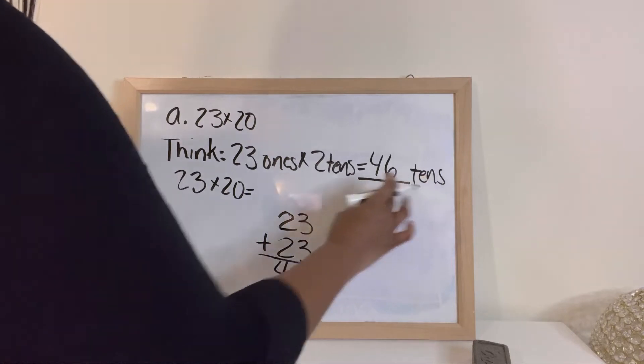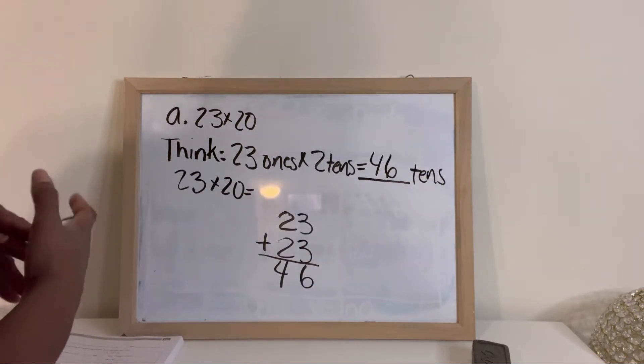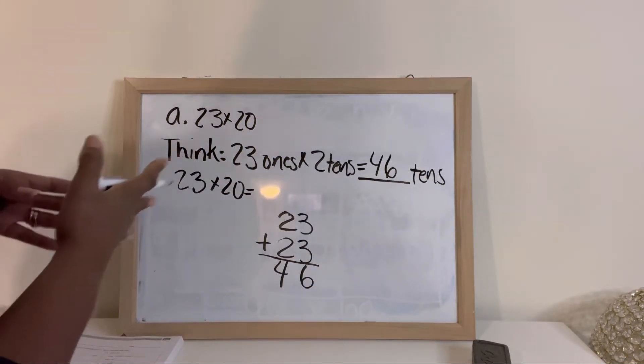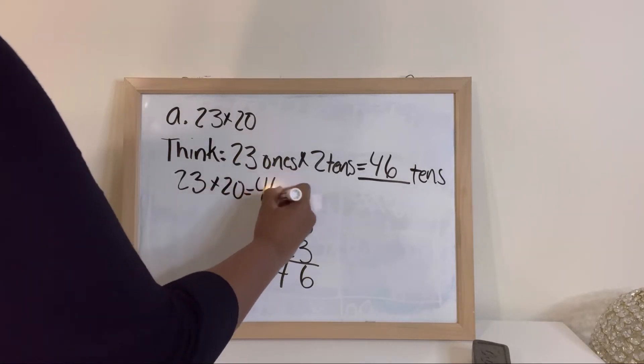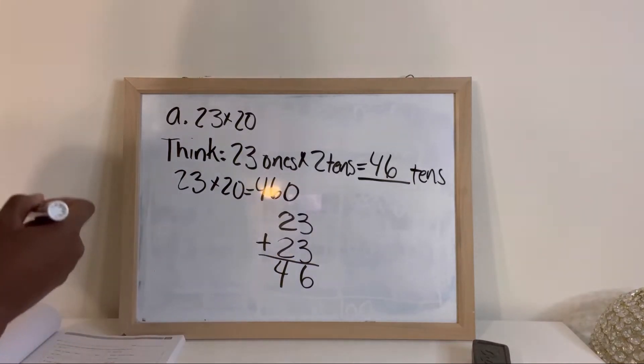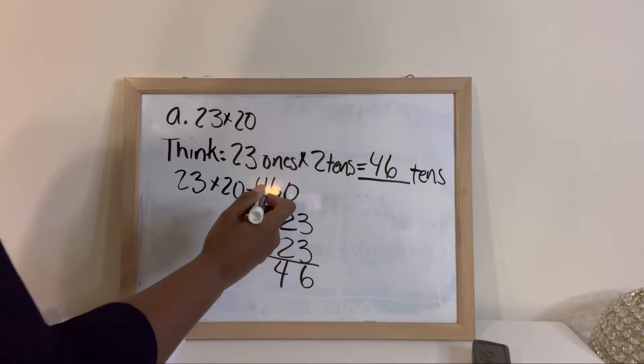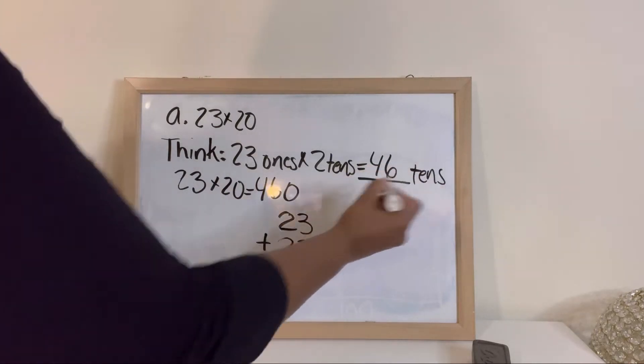So they already tell you what the tens are, and then you just got to think about how does 46 tens look? 46 tens is 460.